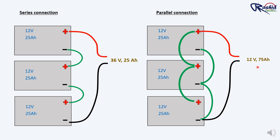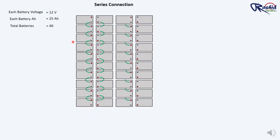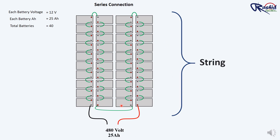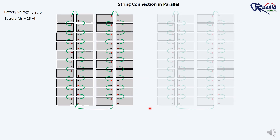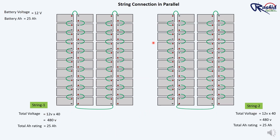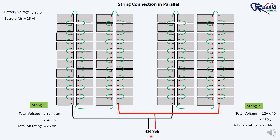Here you can see how 12V batteries are connected in series to increase the overall voltage. A total of 40 batteries are connected in series to achieve 480V — this is the benefit of series connection. When you connect multiple batteries in series like this, it is called a string in a UPS. To increase capacity or AH rating, you connect multiple strings of batteries in parallel. The positive terminals of all battery strings are connected together, and the negative terminals are also connected together, so voltage remains the same while capacity increases.